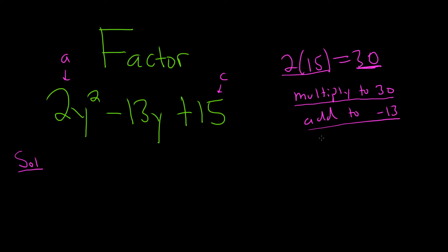So usually you can just think about it. I'm thinking 3 times 10 is 30. That'll work, and they both have to be negative because they have to add to negative 13. So negative 3 and negative 10 will do the job. You multiply these, you get 30. You add them, you get negative 13.